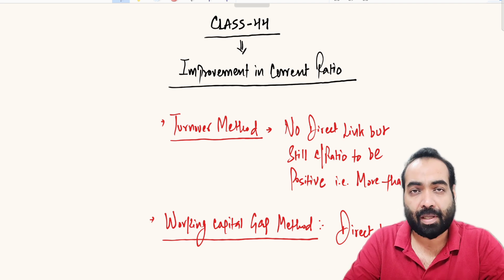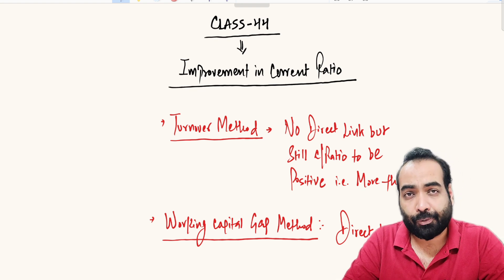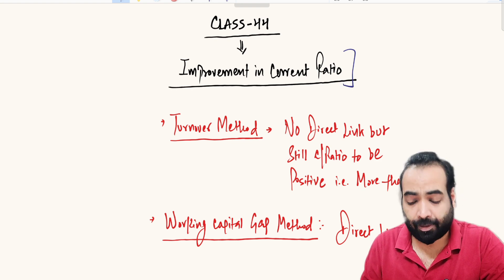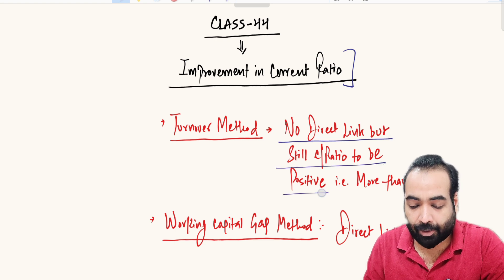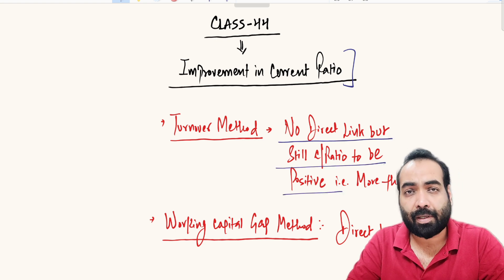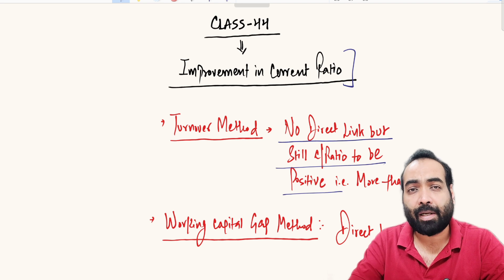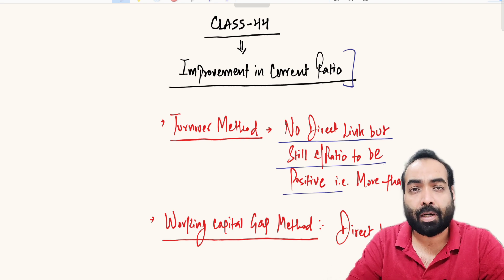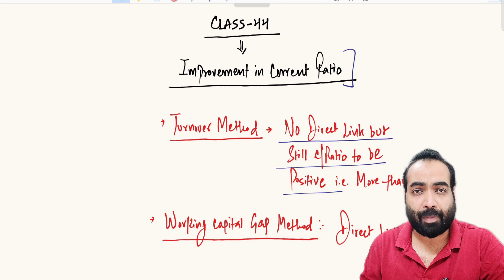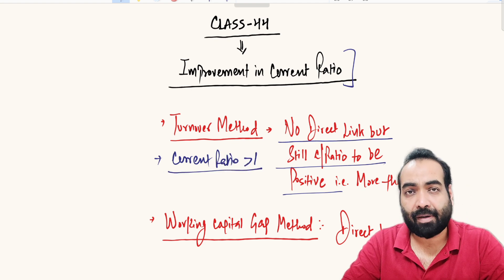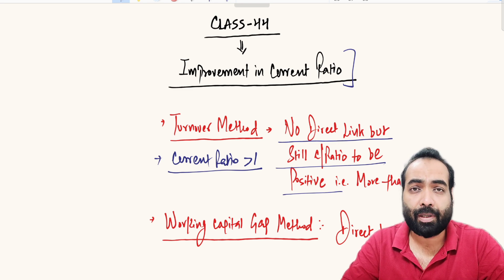The current ratio has a direct link with all of these methods. Now, the turnover method has no direct link with the current ratio in itself — it simply says 20% of the turnover is your final loan eligibility and doesn't speak about current assets, current liabilities, or any item related to current ratio. But practically, when working in a bank, even if you follow the turnover method for eligibility assessment, the current ratio of your case should be more than one.